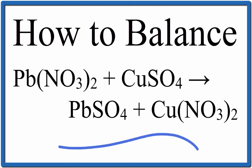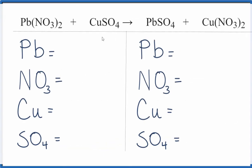To balance this equation, lead 2 nitrate plus copper 2 sulfate yields lead 2 sulfate plus copper 2 nitrate. Let's add up the atoms on both sides of the equation.